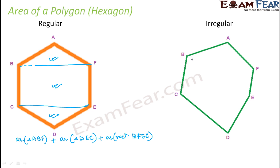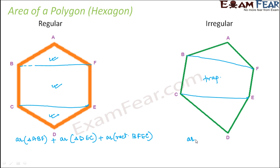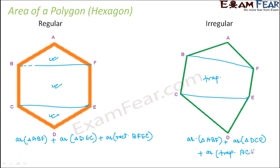When it comes to the irregular hexagon, here also we join BF and CE, but the difference is that what you get in between is not a rectangle — it is a trapezium, because BF is not parallel to CE. So the area of the irregular hexagon is: area of triangle ABF plus area of triangle BCE plus area of trapezium BCEF. The general idea is that for any polygon, draw diagonals to divide it into triangles, rectangles, and trapeziums, find their individual areas, and sum them up to get the area of the polygon.